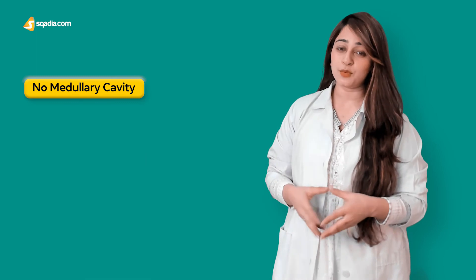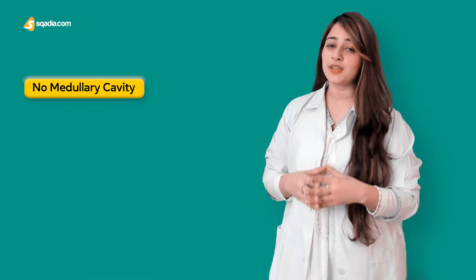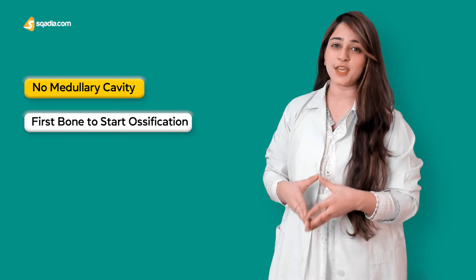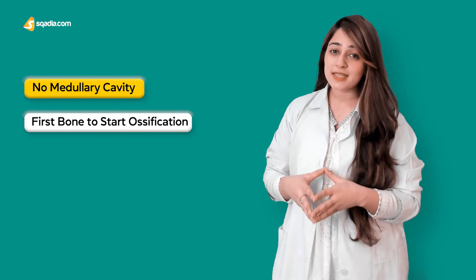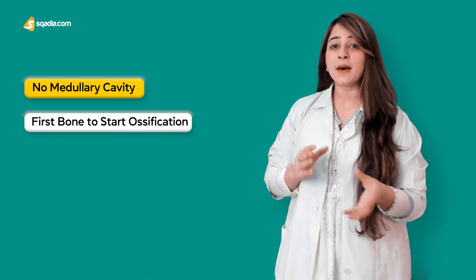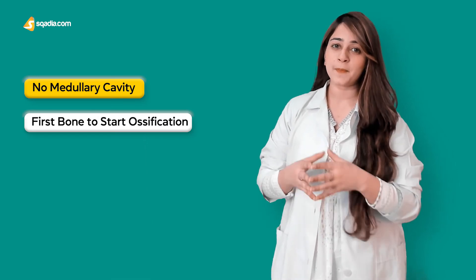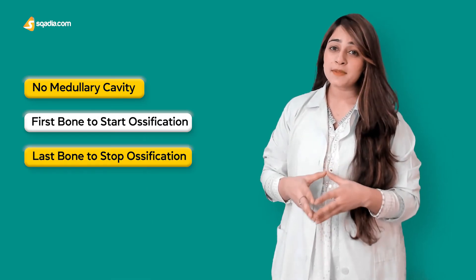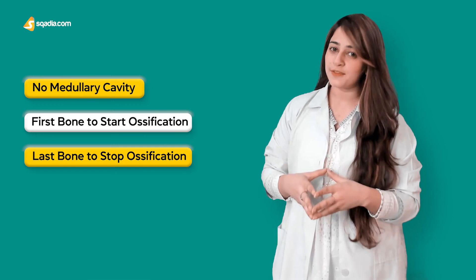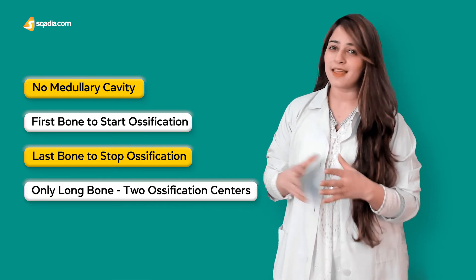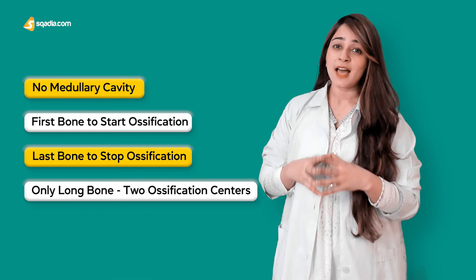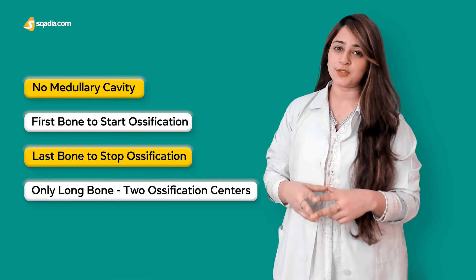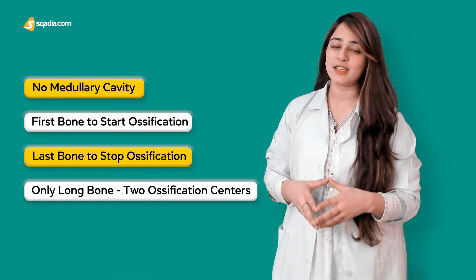More facts about this peculiar bone: the clavicle has no medullary cavity, which is a tubular cavity in a bone carrying bone marrow. It is the first bone to start ossification, which is the process of formation of bone by the osteoblasts. Later, it becomes the last bone to stop ossification. It is the only long bone having two ossification centers — the primary one and the secondary one.